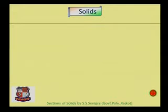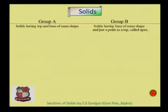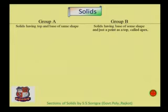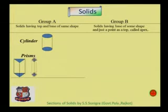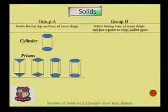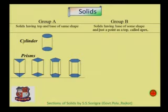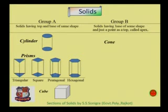There are four types of basic solids, which can be categorized into two groups. Group A consists of solids having a top and base of the same shape. The first is cylinder — two circular faces, upper and lower, joined with straight edges. Then prism — upper and lower faces may be any polygon: triangle, square, pentagon, or hexagon, giving us triangular, square, pentagonal, and hexagonal prisms. Cube is also covered in Group A, where all sides are equal and square.